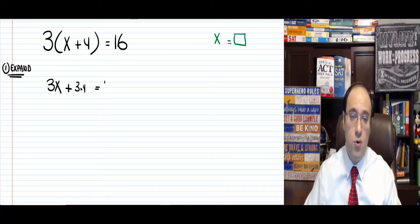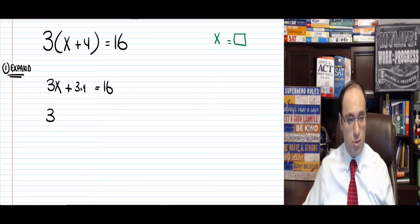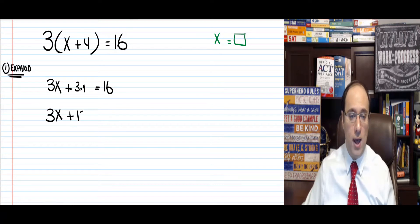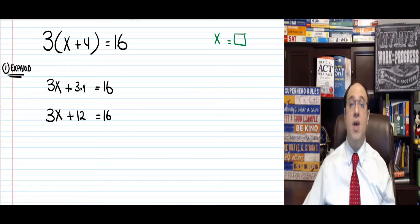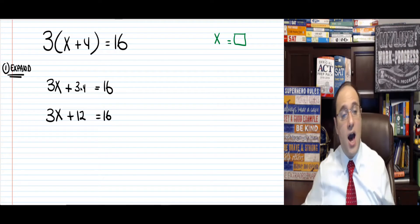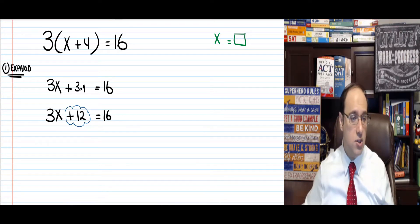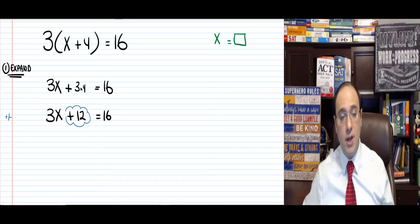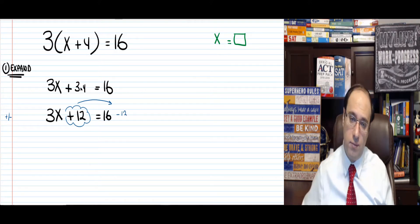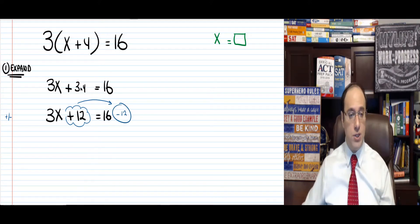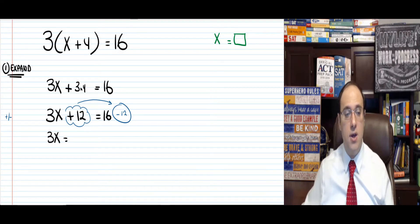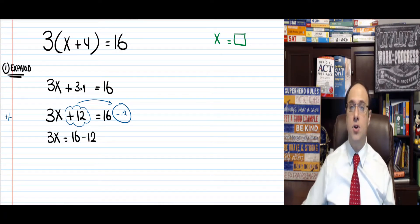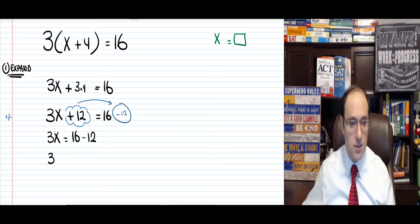So 3 times x plus 4 is 3 times x plus 3 times 4. I just expanded. 3x plus 3 times 4 equals 16, so 3x plus 12 equals 16. Now this is going to be easy. I need to get rid of the pluses or minuses first — we always get rid of the plus or minus first. So the plus 12 goes to the other side as minus 12. Rewrite — always write every step. 3x equals 16 minus 12, which means 3x equals 4.